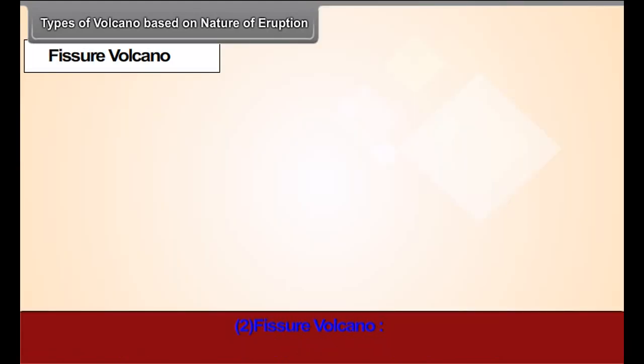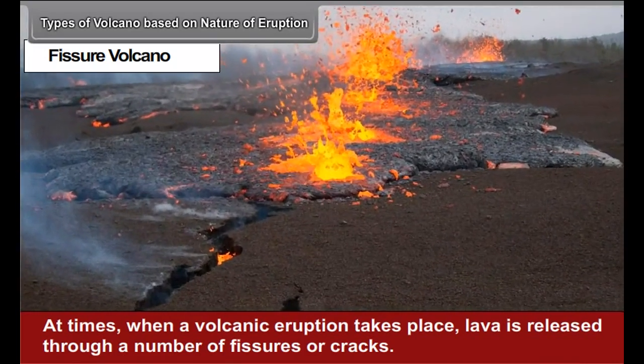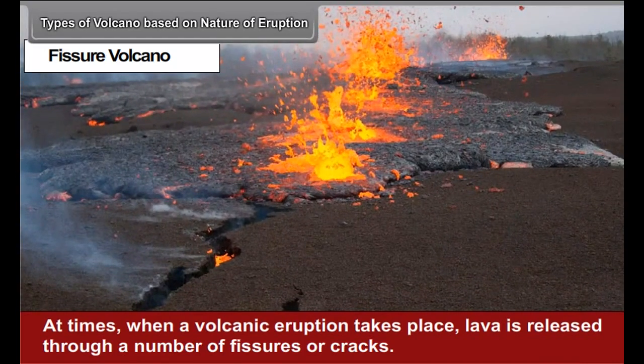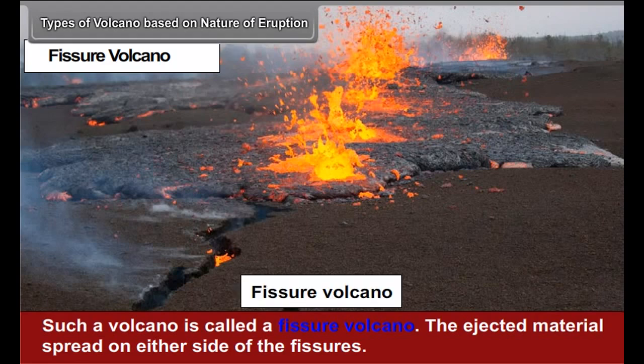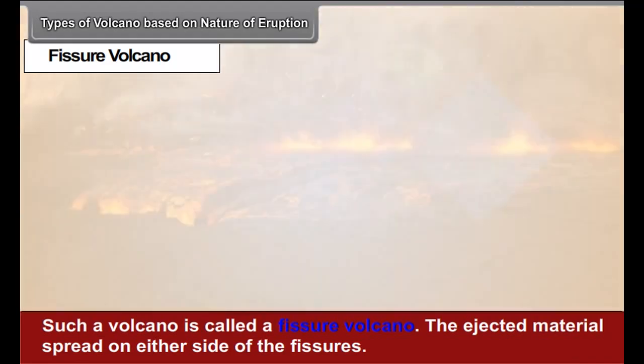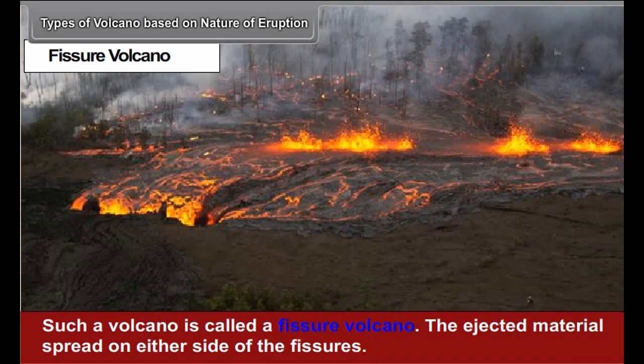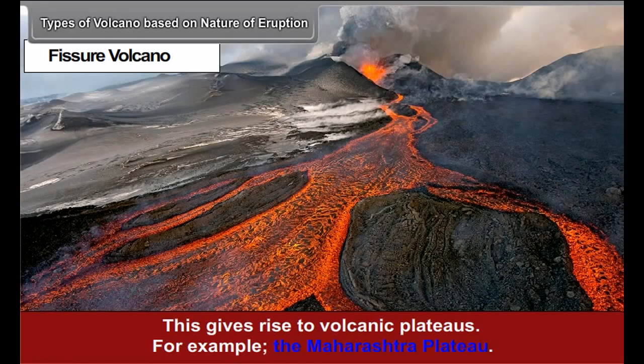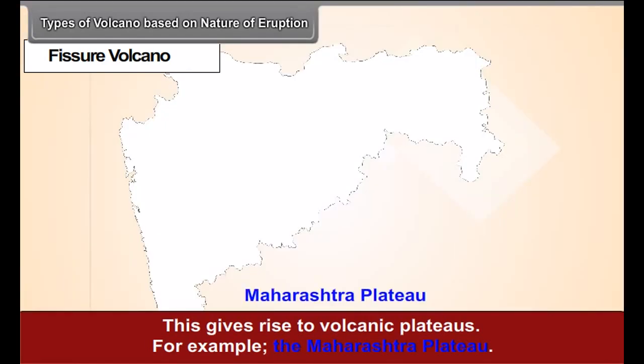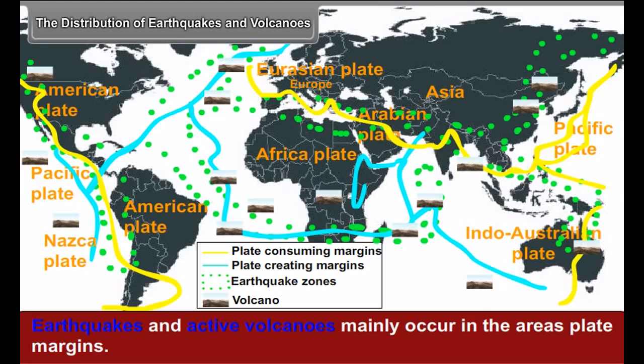Fissure volcano. At times, when a volcanic eruption takes place, lava is released through a number of fissures and cracks. Such a volcano is called a fissure volcano. The ejected material spreads on either side of the fissures. This gives rise to volcanic plateaus. For example, the Maharashtra Plateau.